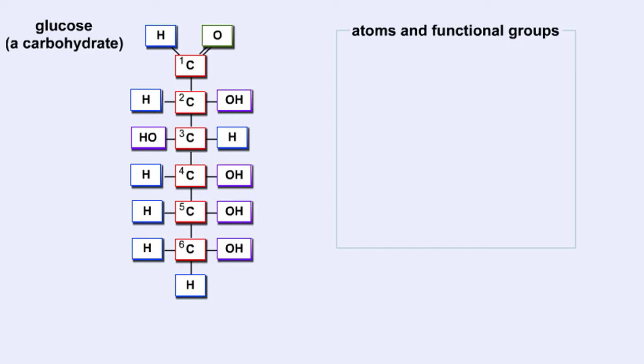Glucose belongs to a group of carbohydrates called simple sugars or monosaccharides, from mono meaning one and saccharum meaning sugar. The number of carbon atoms and the arrangements of hydrogen atoms, OH groups, and double bonded oxygen atoms differentiate between different simple sugars.